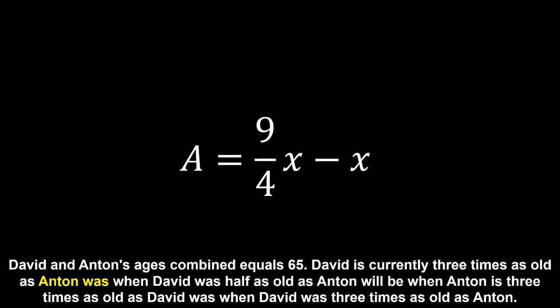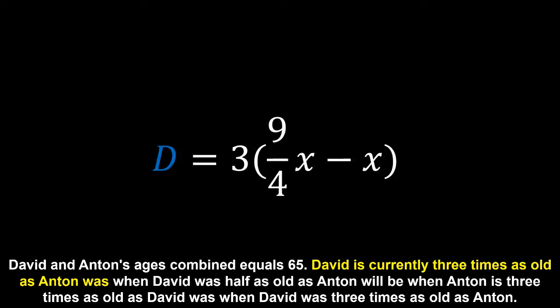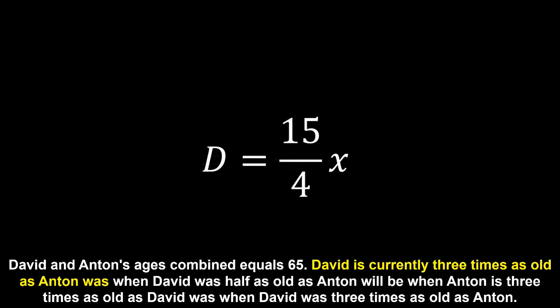Finally, for this part of the puzzle, we know that David is currently three times as old as Anton was in this time frame. We can multiply both sides by three, and replace three times Anton's age with David's current age. Once we expand the brackets and take 3X from 37 on 4X, we have David's current age being equal to 15 on 4 times the age difference.